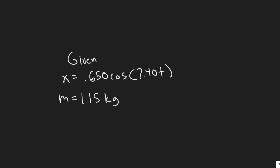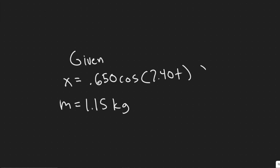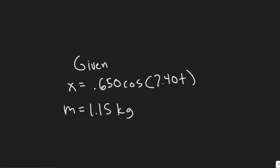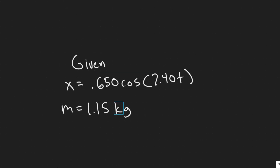In this problem we're told a 115 kg mass oscillates according to the equation x equals 0.650 cosine of 7.4t, where x is in meters and t is in seconds. We need to determine: a) the amplitude, b) the frequency, c) the total energy, and d) the kinetic and potential energy when x equals 0.260 meters. So the first thing we're given is the formula for oscillation in simple harmonic motion, along with the mass.